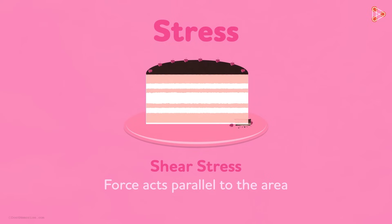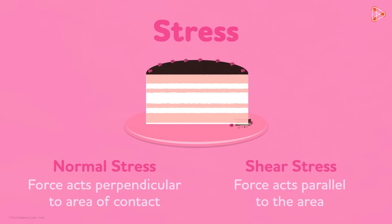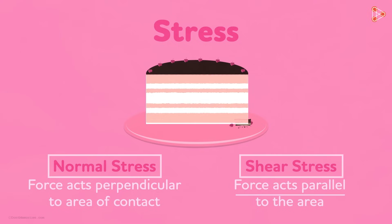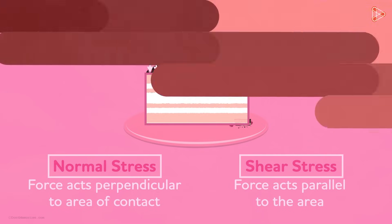This stress tries to push the two surfaces away from each other and hence results in plastic deformation. So this is the basic difference between normal stress and shear stress. Normal stress is where the force is acting perpendicular to the area of contact while shear stress is the force that acts parallel to the area. Let's take another example which explains shear stress better.